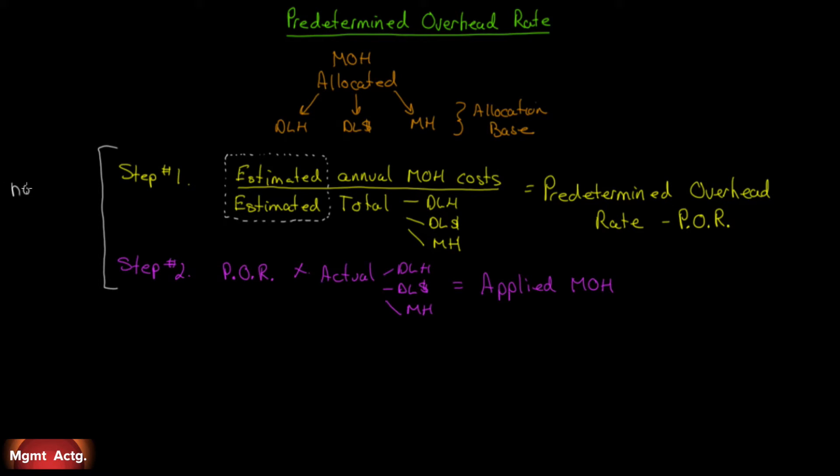This, by the way, is referred to as a normal cost system. This is the most widely used costing system in manufacturing facilities - allocation of overhead based on some predetermined overhead rate.